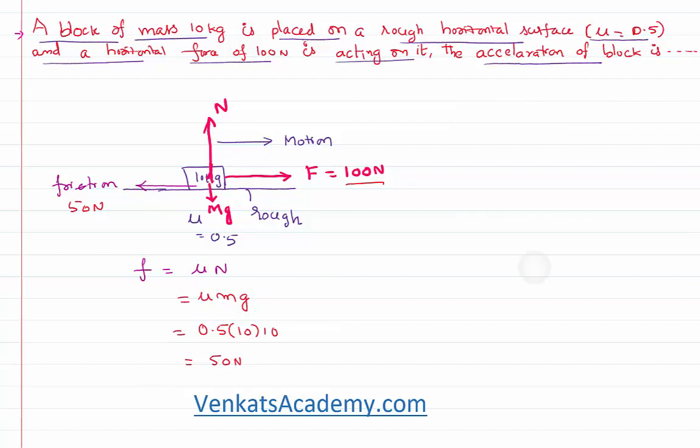Therefore body will move. So I can calculate F resultant. F resultant force is simply applied force minus frictional force. I am writing minus because frictional force is acting against the relative motion. F resultant is ma. F applied is 100 newton. Frictional force is 50 newton.